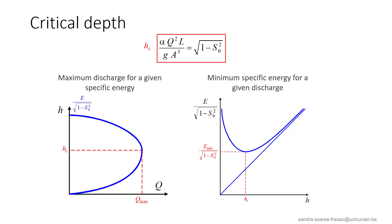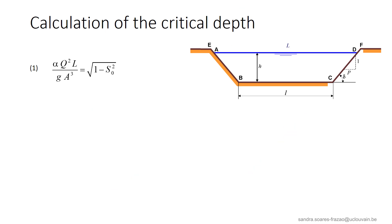We have seen in a previous lesson that the critical depth is the depth that maximizes the discharge for a given specific energy, or the depth that minimizes the required specific energy for a given discharge. The critical depth is the solution of this equation, and we will now see how to calculate it in practice. Let us consider the case of a trapezoidal cross-section. We need to express L and A as functions of the water depth H in order to find the value of the critical depth.